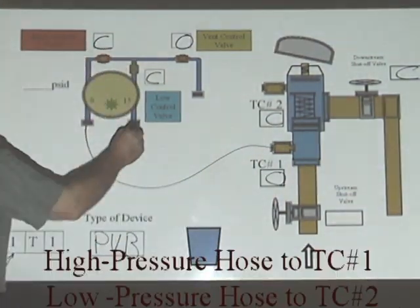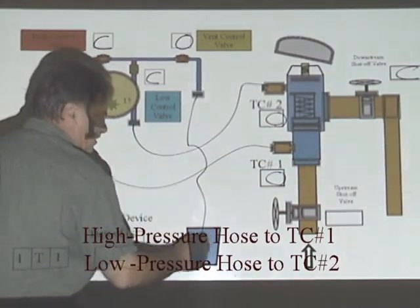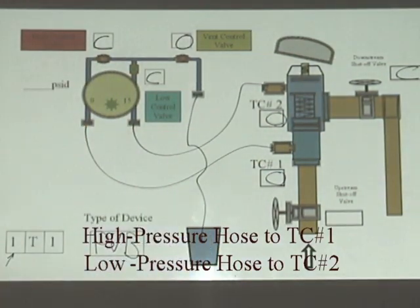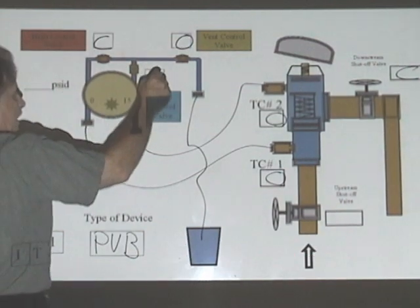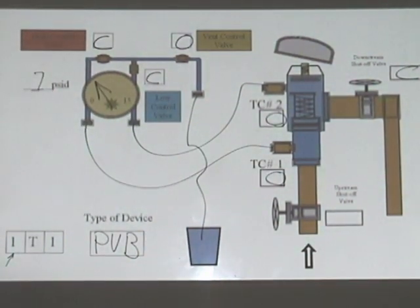high side, low side to number two, open that up, vent in the bucket, bleed my high, bleed my low, take my reading. I should have a differential pressure of one or greater.